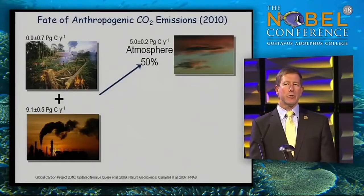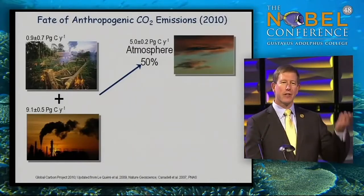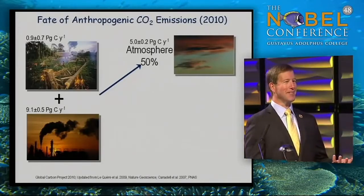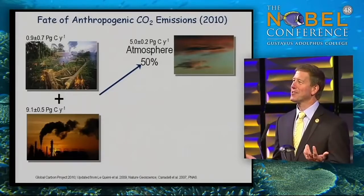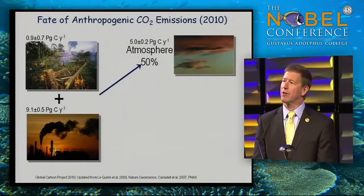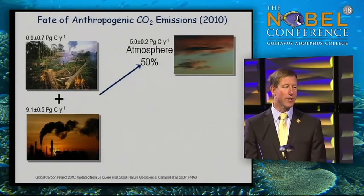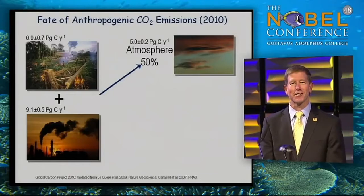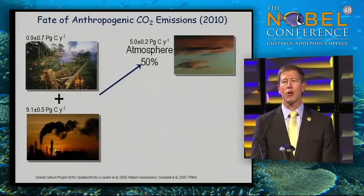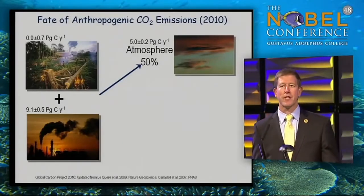So where does that CO2 go? We burn it in our power plants, in our cars, it comes out into the atmosphere. It turns out only about half of the CO2 we release is staying in the atmosphere. Where's the rest going? When I first started working on the global carbon cycle, we really didn't know where it was all going, but we think we've closed that budget now.